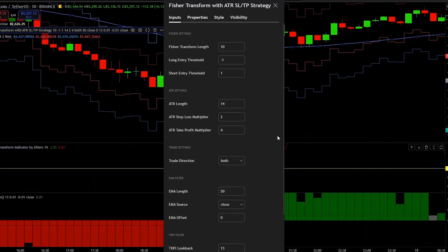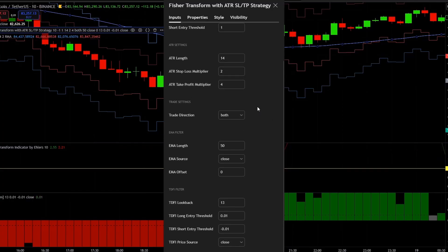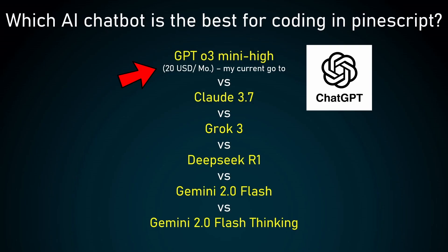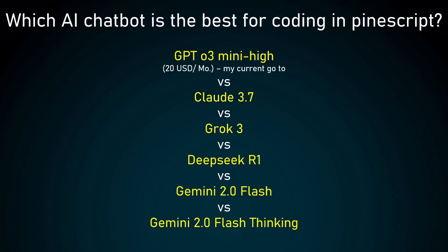Now let's see how each AI chatbot performs. If you want to get access to this script, go down into the description — you will find the Google Drive link there. I've included the results of all the AI chatbots so you can compare them. I will test these chatbots in two phases. A quick note: I use GPT-O3 Mini High, which is currently the best model for coding with ChatGPT, but that is a paid version. I'm only using ChatGPT for coding all my strategies for this channel, so that will be the baseline. If I would decide to switch to any other AI model, they have to beat or at least come close to GPT-O3 Mini High.